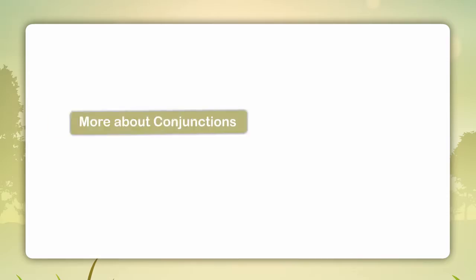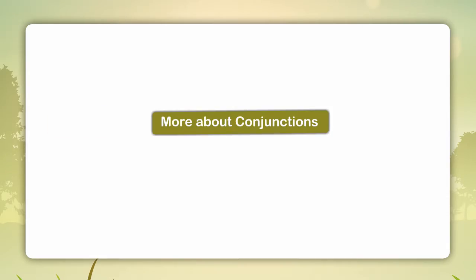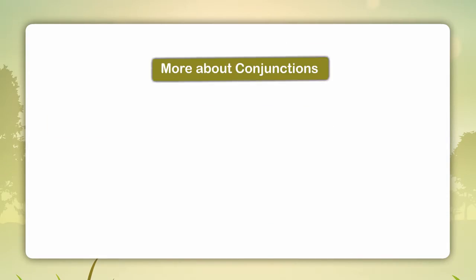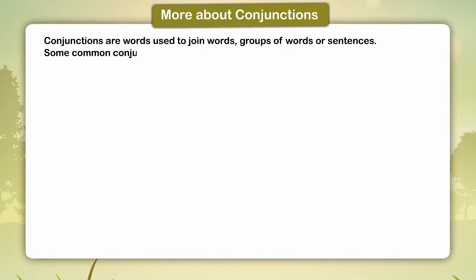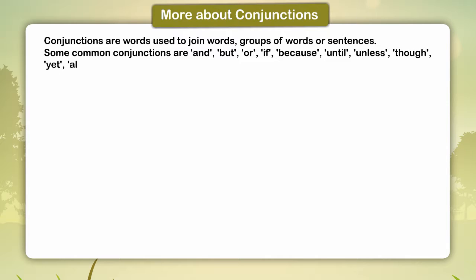Conjunctions — more about conjunctions. Conjunctions are words used to join words, groups of words, or sentences. Some common conjunctions are: and, but, or, if, because, until, unless, though, yet, although, since, either, and as.